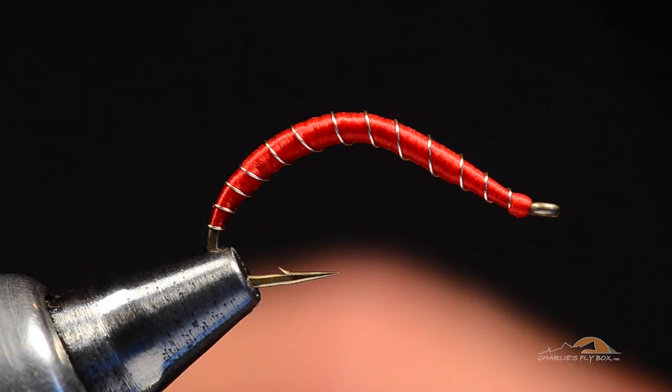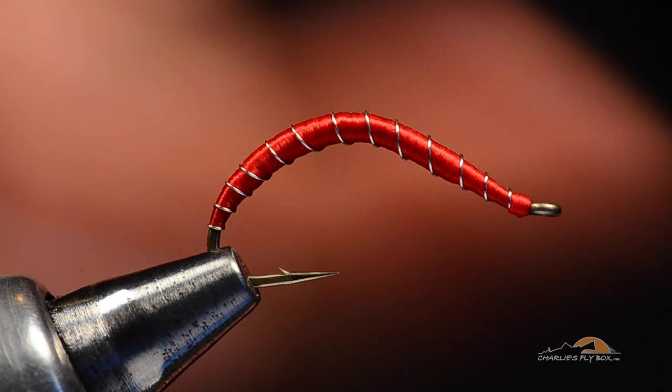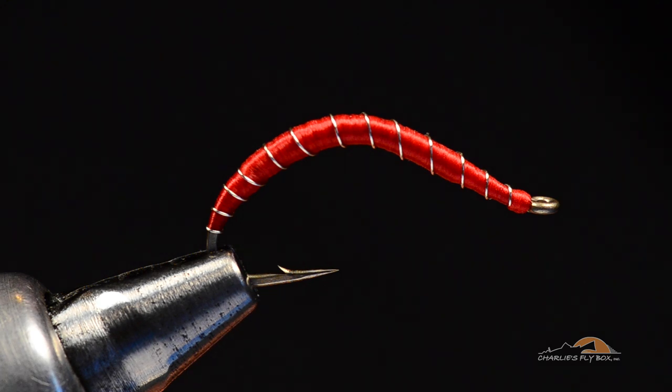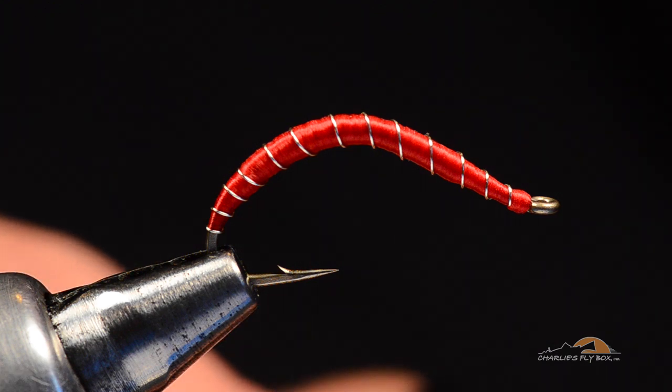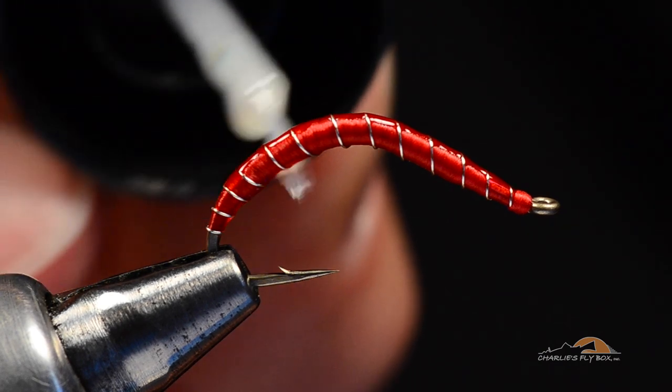And really, you could call it done there if you're a quitter. But we're going to put some sort of coating over the top. You can use Sally Hansen's or just regular head cement. With regular head cement, I like to go a couple coats. I'm going to use this Solarez Ultra Thin. I'm going to put a nice coat over the top.